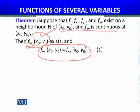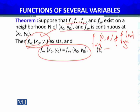Let me stop here. In the last example, we saw that the values of partial derivatives at the origin were not the same — f_xy was not equal to f_yx at the origin. This means one of these conditions must have been violated in that example. You have to find out which condition was violated.